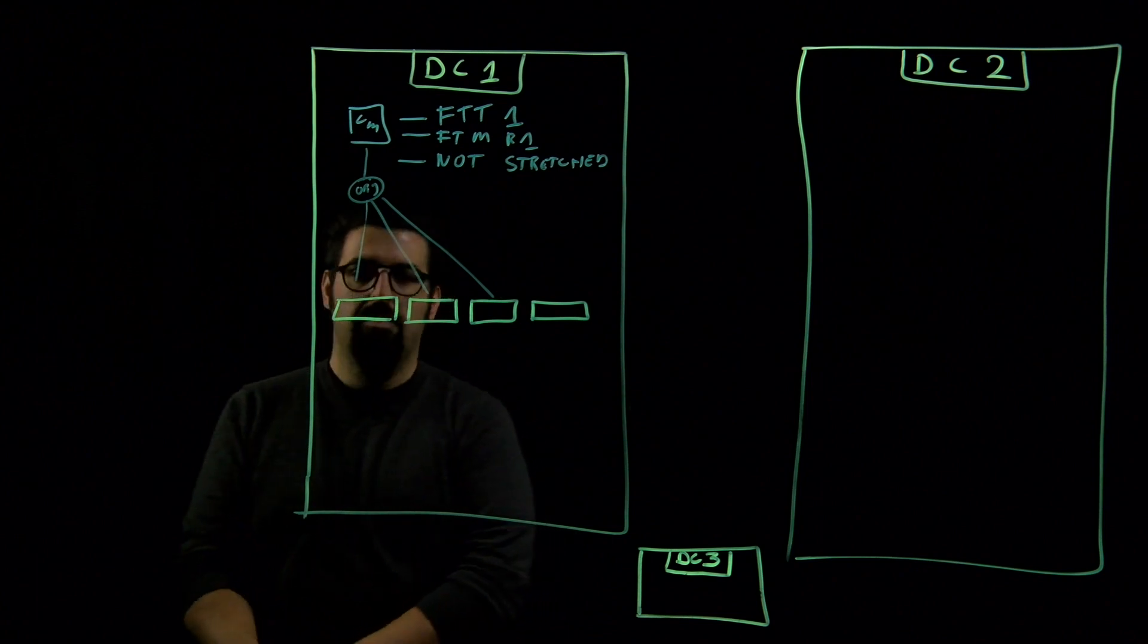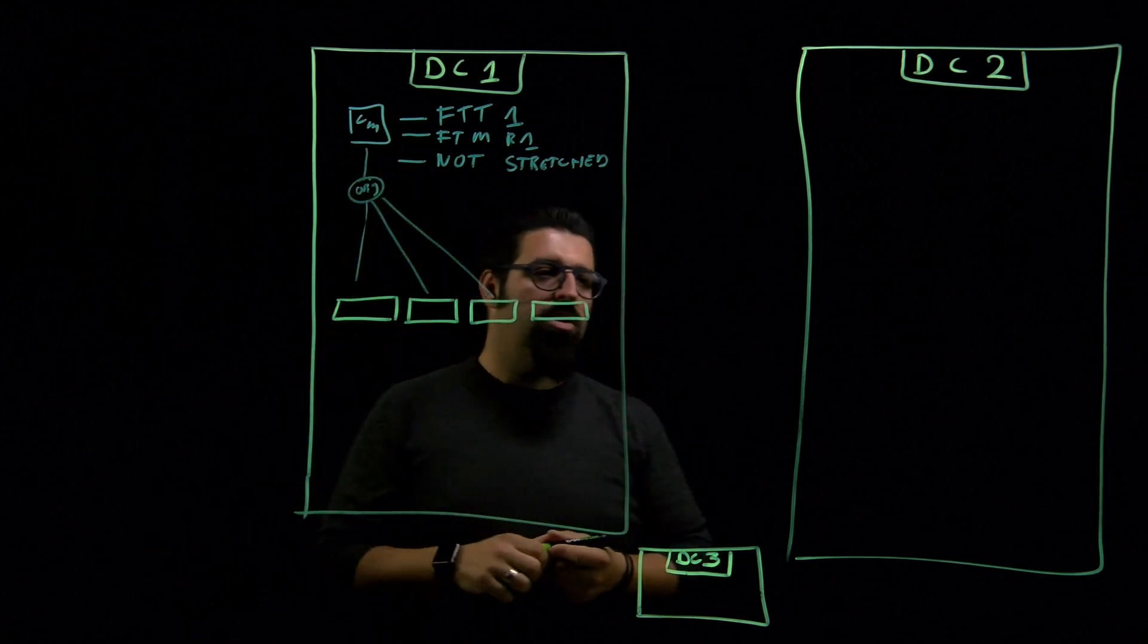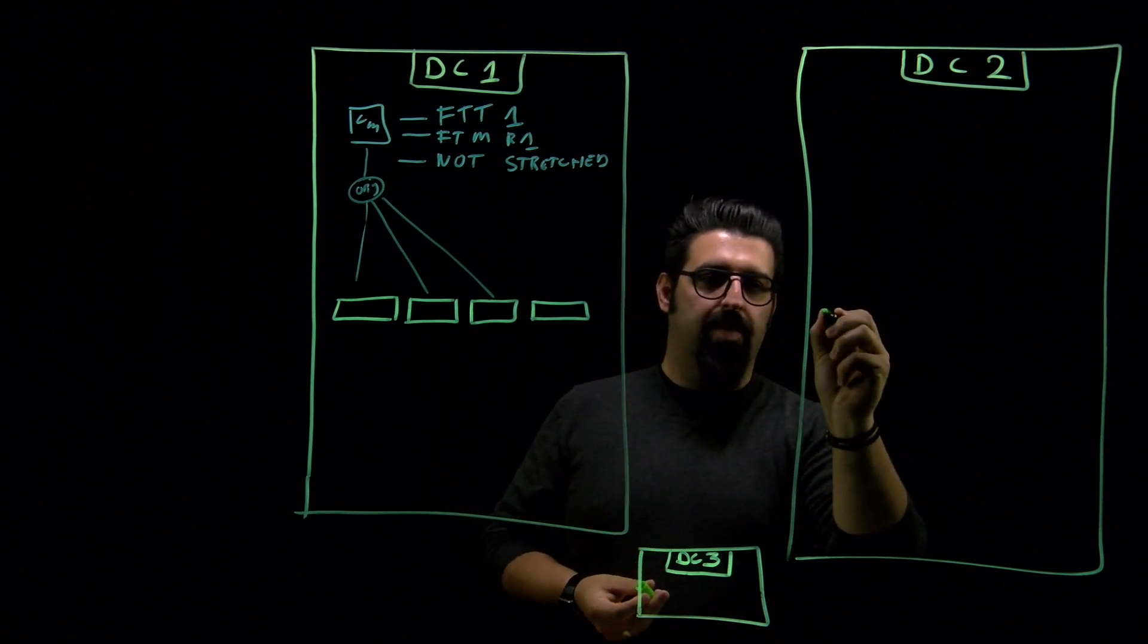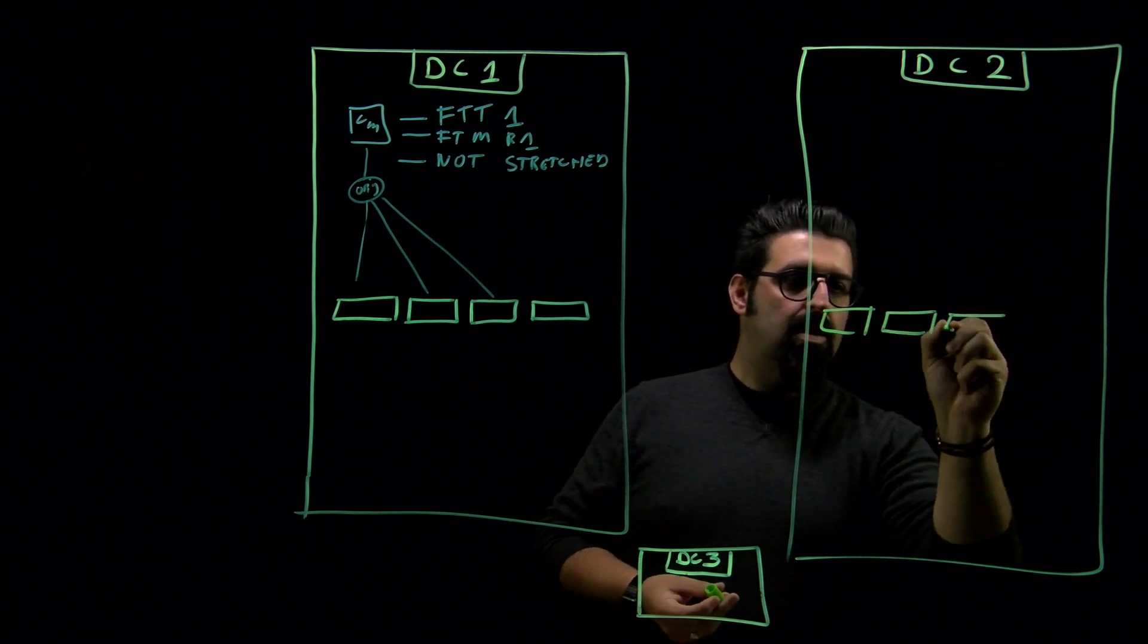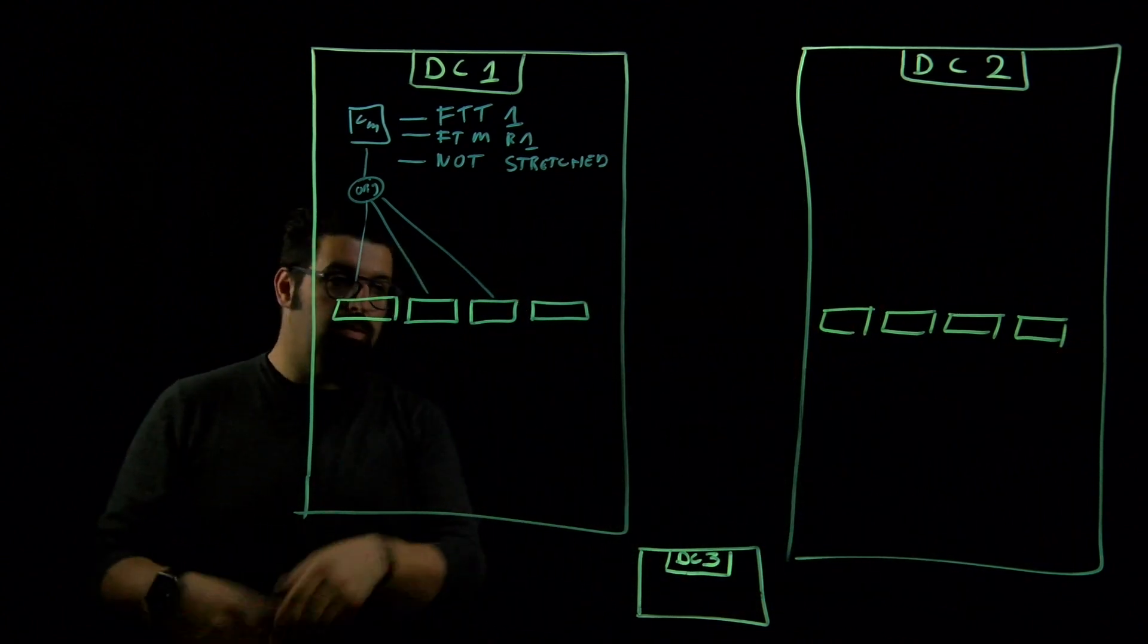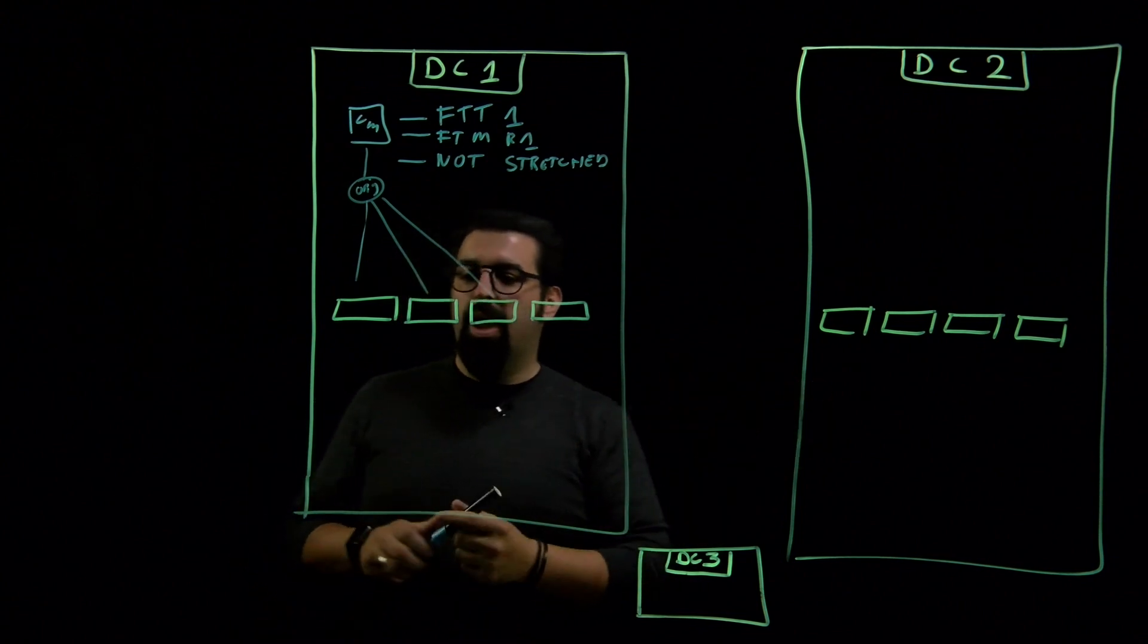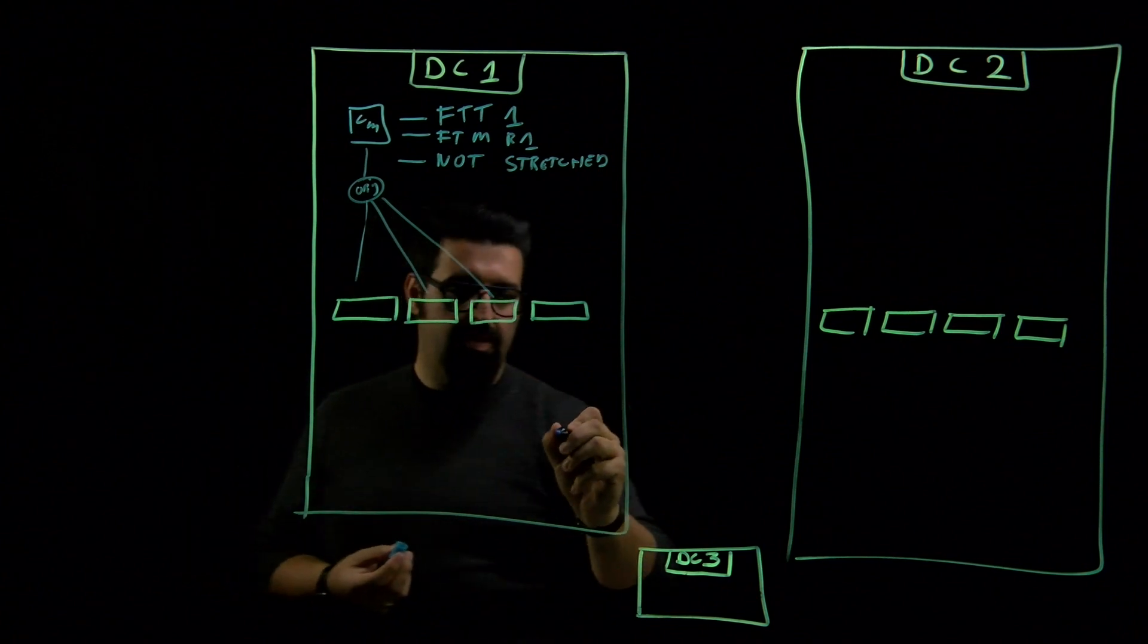Now let's see what if I would introduce a second site. This will not change but potentially another VM will use the stretch cluster. Now let's make a second data center. We have four hosts on each site and now we can have a VM. I will draw it here, a VM here.